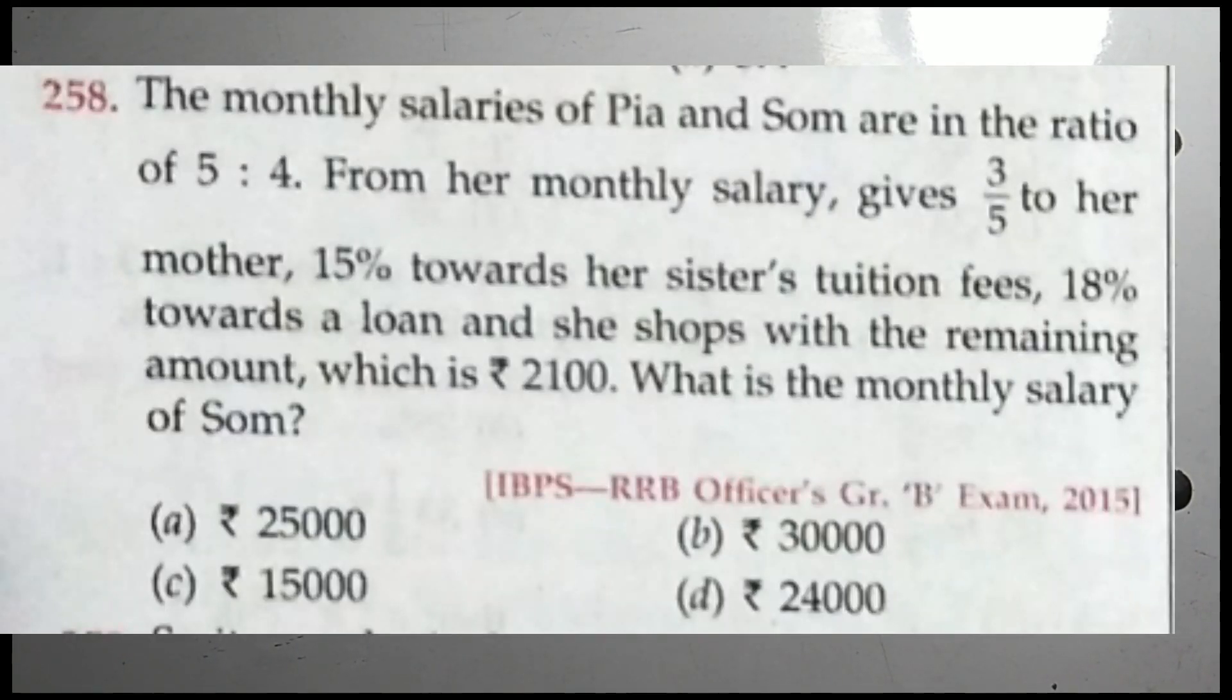Question number 258. The monthly salaries of Pia and Soma are in the ratio of 5 to 4. From her monthly salary, she gives 3/8 to her mother, 15% towards her sister's tuition fees, and 18% towards a loan, and she shops with the remaining amount which is ₹2100.